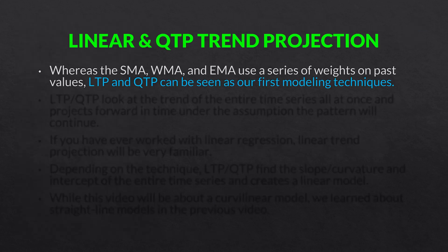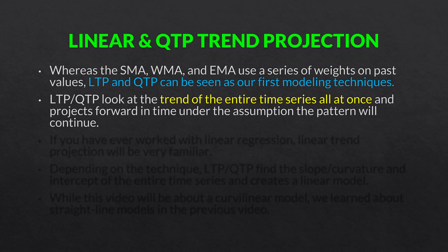Some conceptual background. Whereas the simple moving average, the weighted moving average, and the exponential moving average use a series of weights on past values, linear trend projection and quadratic trend projection can be seen as our first modeling techniques. So LTP and QTP look at the trend of the entire time series all at once and project forward in time under the assumption the pattern will continue.